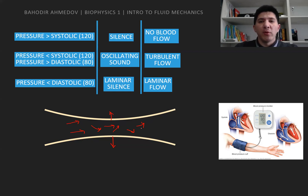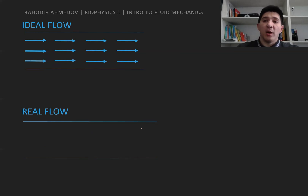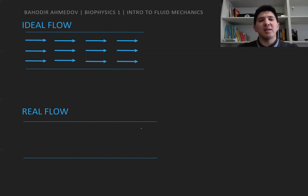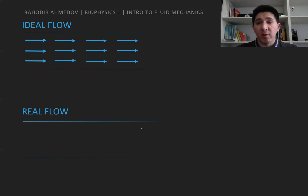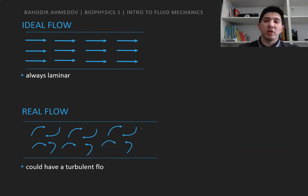Another important concept of flow to consider is ideal flow versus real flow. In the theory of fluid mechanics, we always discuss concepts and laws applicable to ideal flow. The ideal flow is always laminar, while the real flow — for example, your blood — can be laminar or sometimes turbulent.